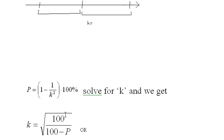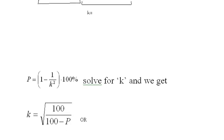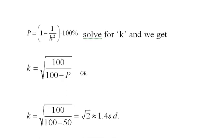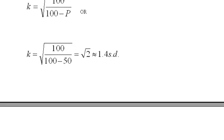When we do that we get K equals the square root of 100 over 100 minus P. So I can put in my 50% here and when I do that I get 100 over 50 which is 2, square root of 2 which equals 1.4 standard deviations. So now we do know K, we know the number of standard deviations.